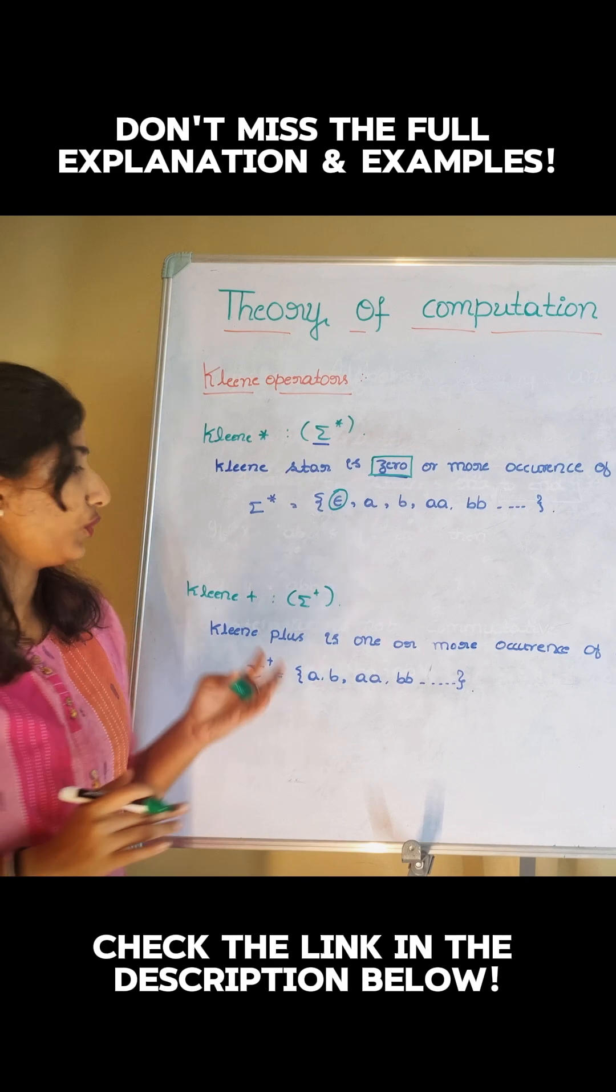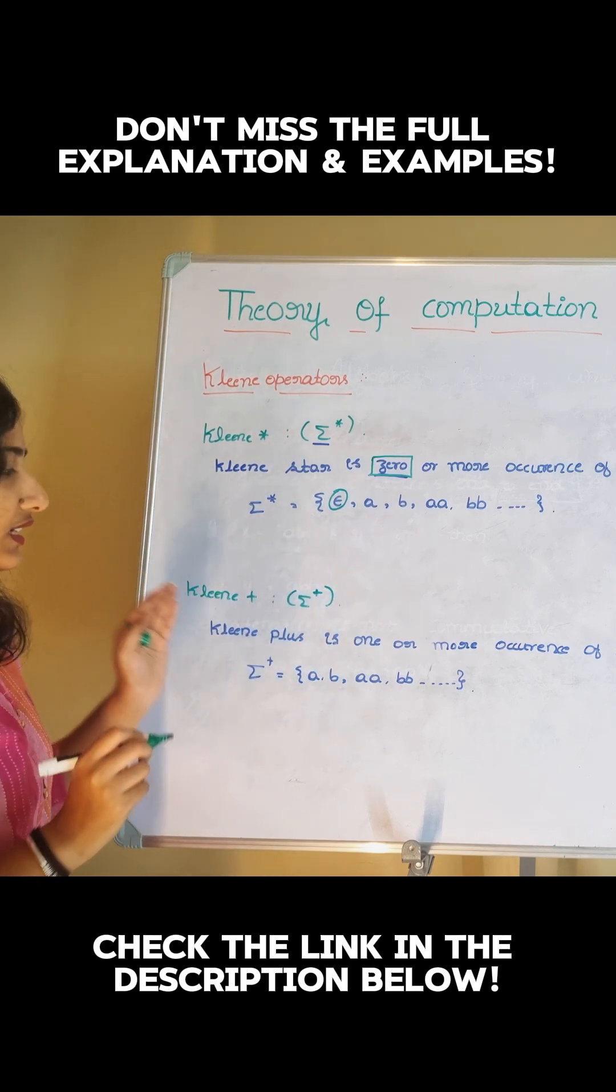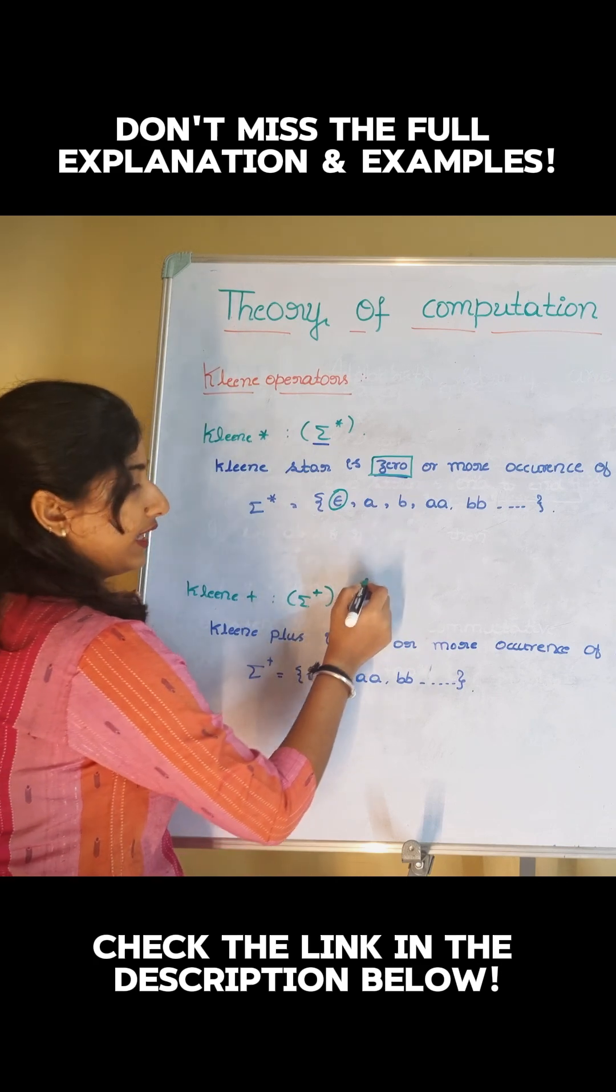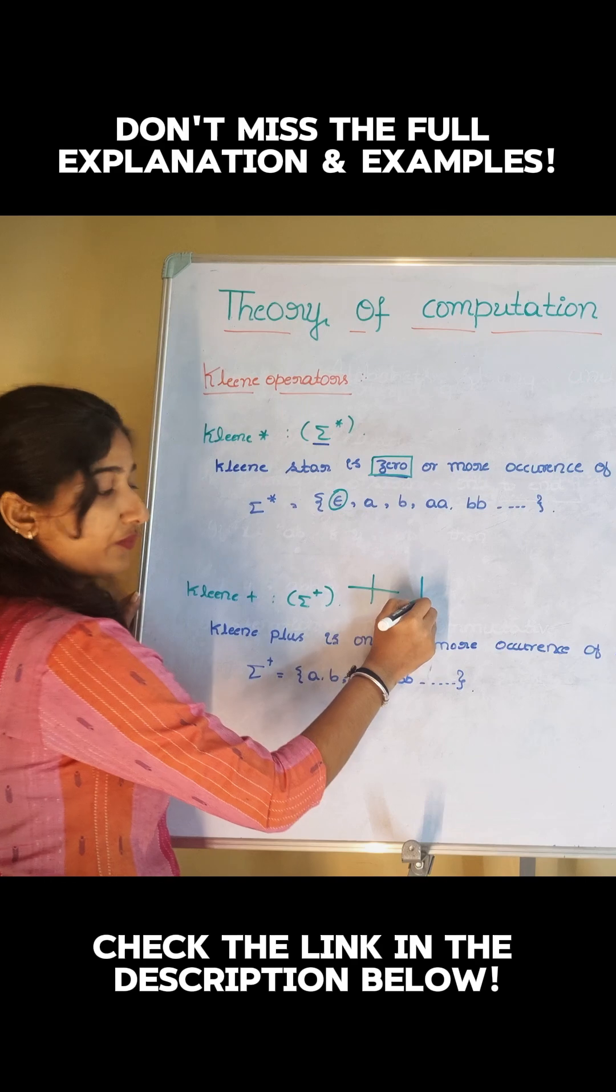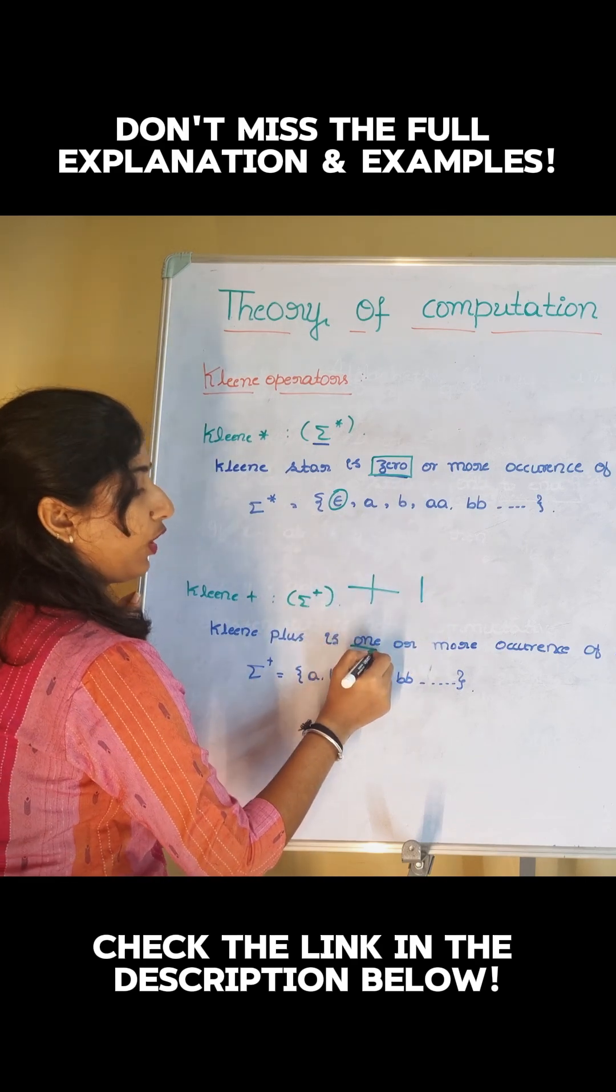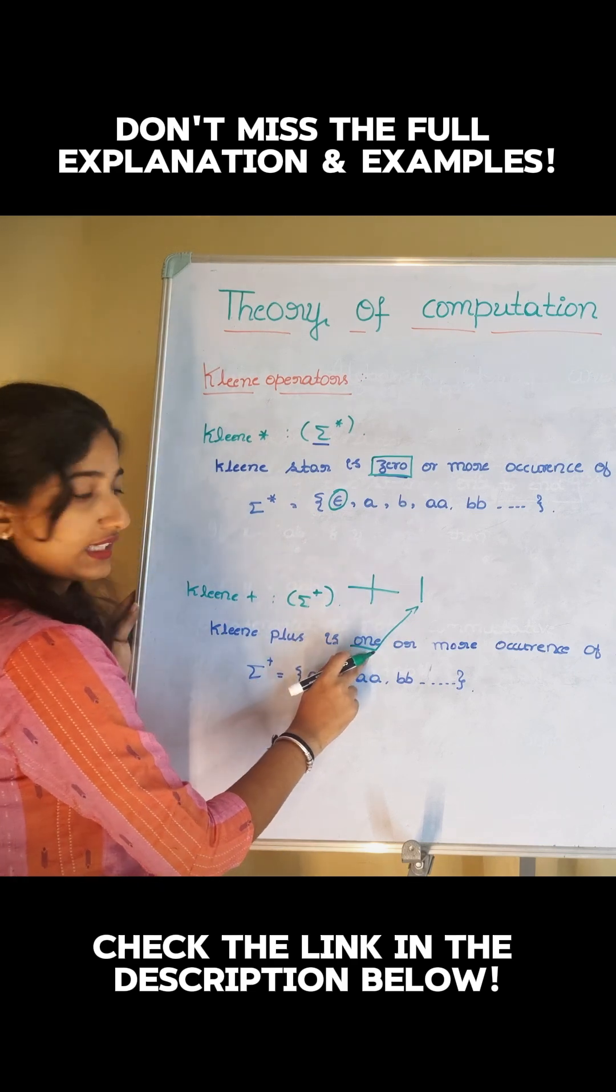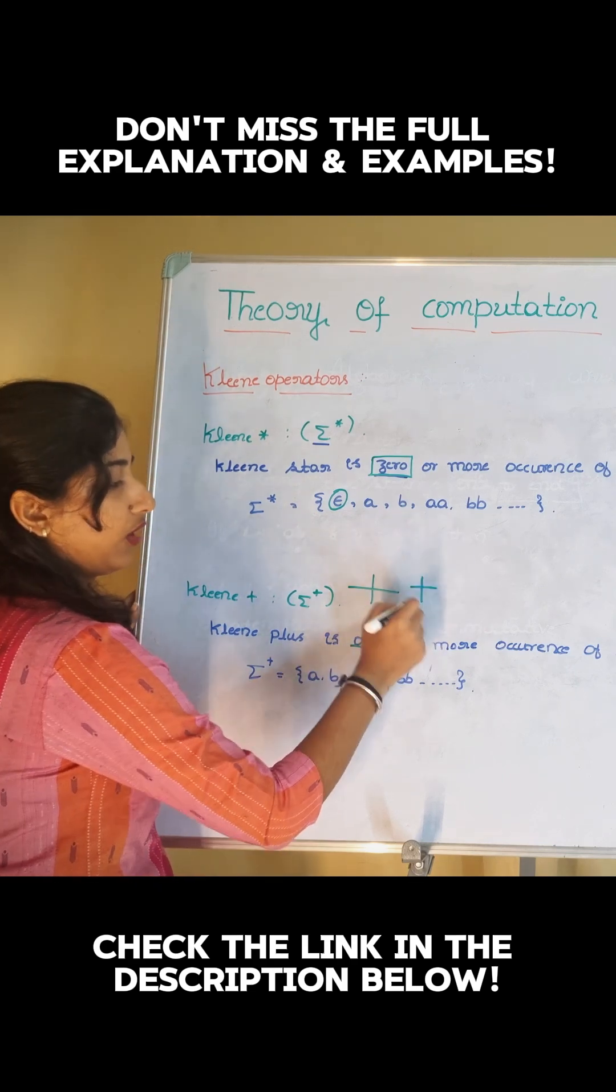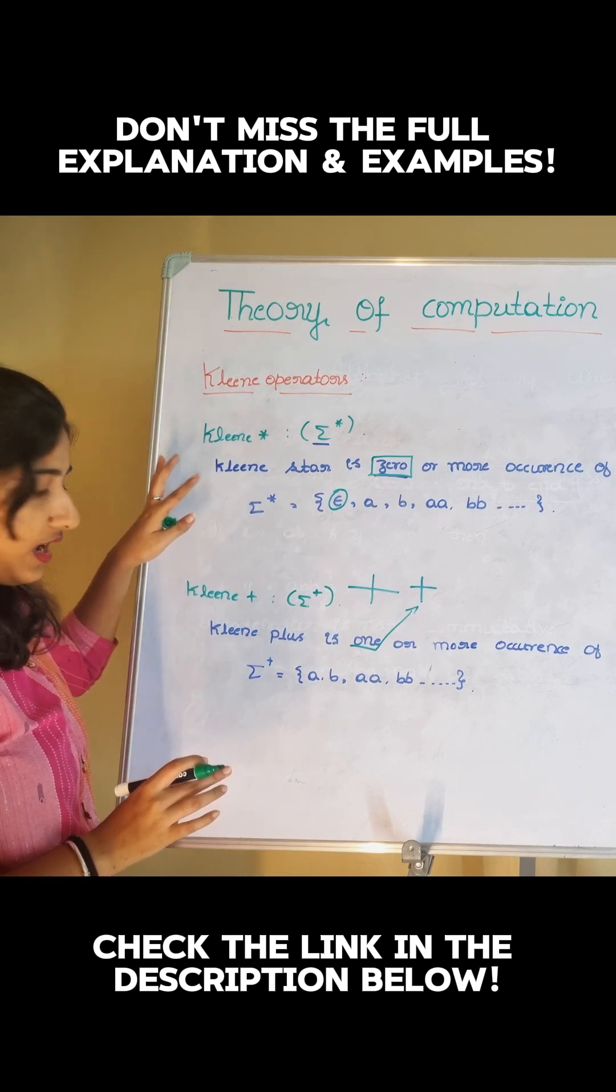Now, what is clean plus? Clean plus is represented by sigma to the power plus. Remember how to write plus: first we write it like this. Clean plus is one or more occurrence of a string, while clean star is zero or more occurrence.